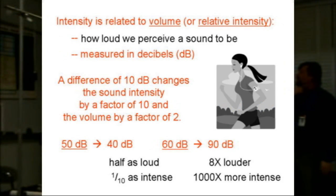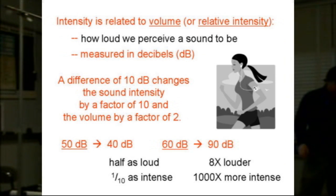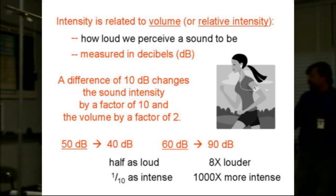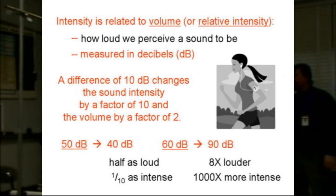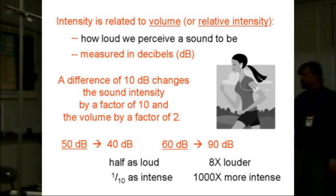Intensity is related to volume or relative intensity, and this is measured in decibels — how loud we perceive a sound to be. Zero decibels is barely audible; that's our ground zero. A difference of 10 decibels changes the sound intensity by a factor of 10, and the volume by a factor of 2. So going from 50 decibels to 40 decibels, our intensity is half as loud and one tenth as intense.